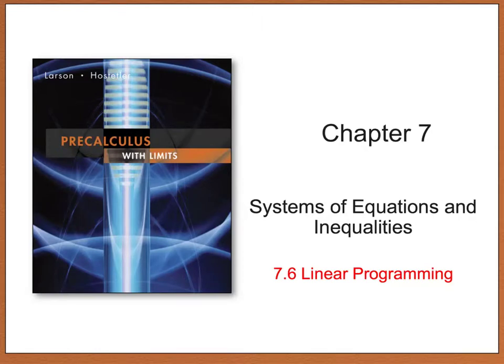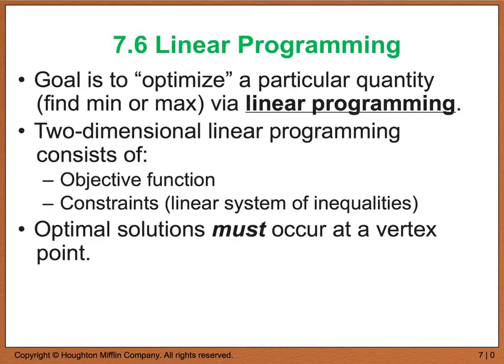Hello, and welcome to the last section of Chapter 7. Today we're going to look at Section 7.6, which deals with linear programming. 7.6 is going to deal with the real-life applications where businesses are typically looking at trying to either maximize a profit or minimize a cost. And their ultimate goal is to do what we call optimize something, and optimizing is nothing more than finding a min or a max, and they can do that using a method which we call linear programming.